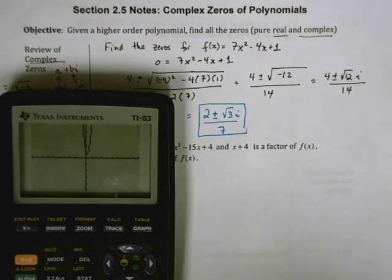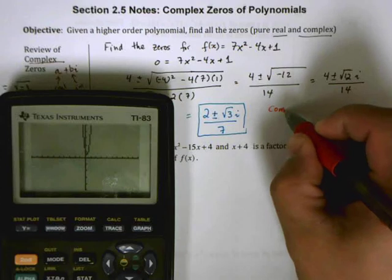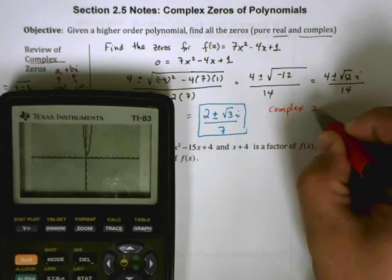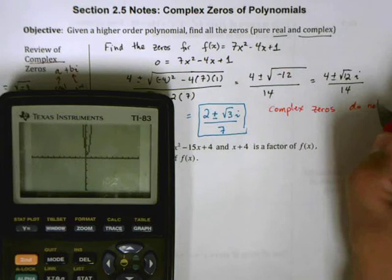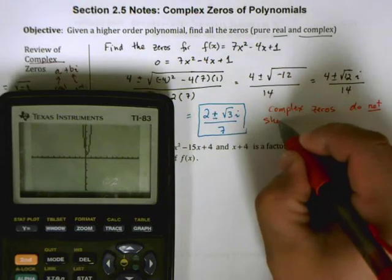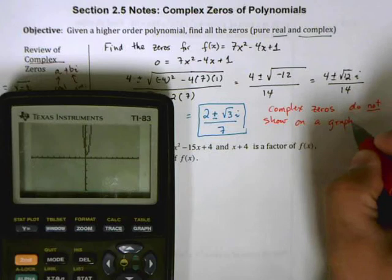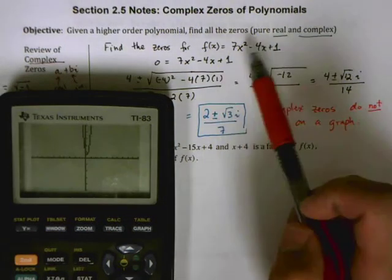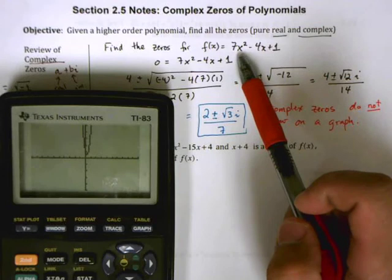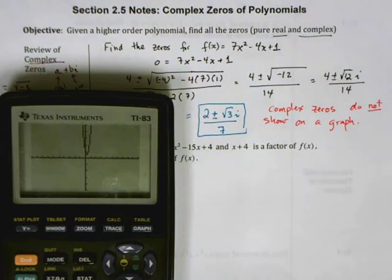This is kind of the part where graphing does a lot of work for us, but once we get to complex solutions, graphing is no longer useful because it doesn't give us a complex solution. One note here to make is that complex zeros do not show on a graph. They work algebraically—if you were to take this value and substitute it back in here, you would in fact get zero—but you would not see it on a graph.